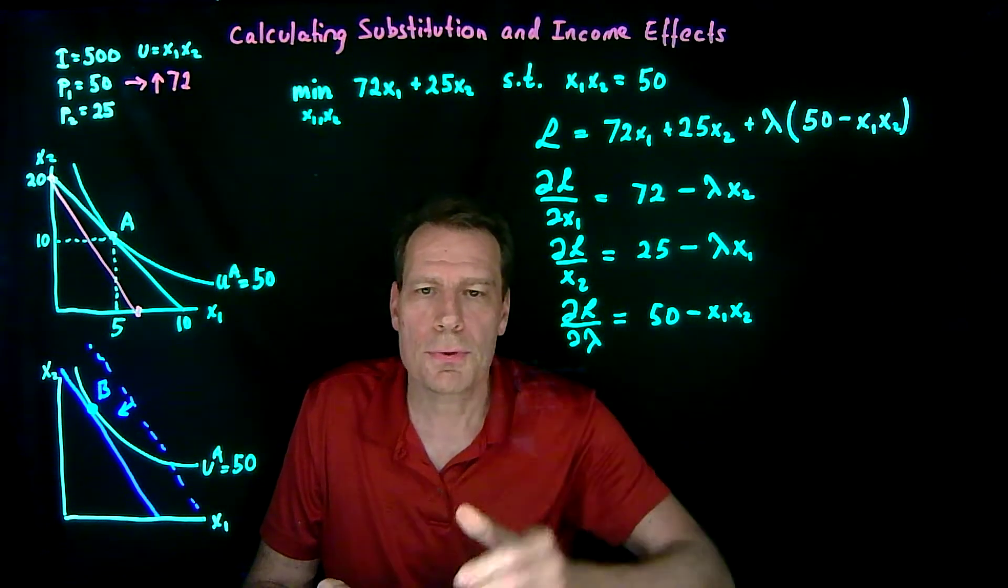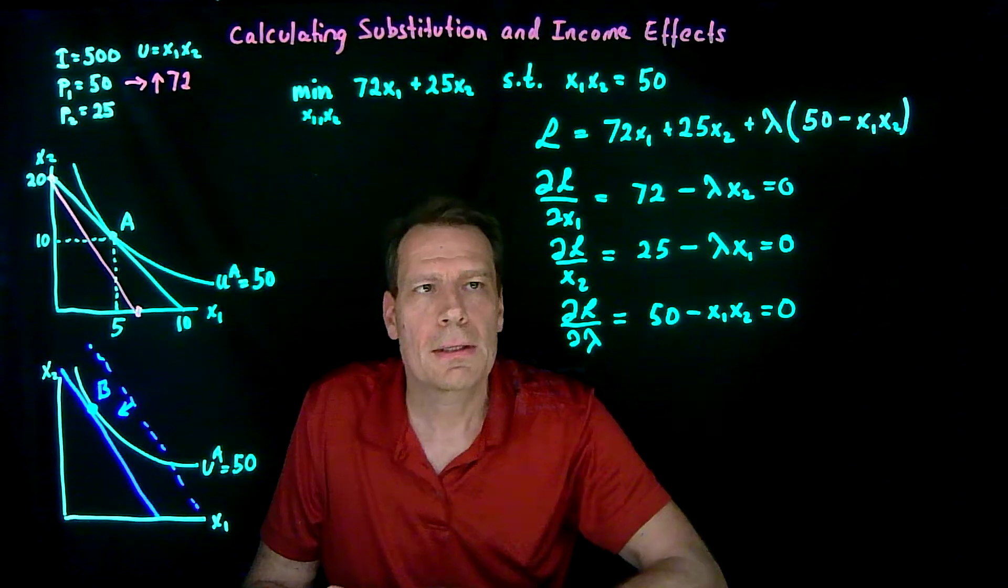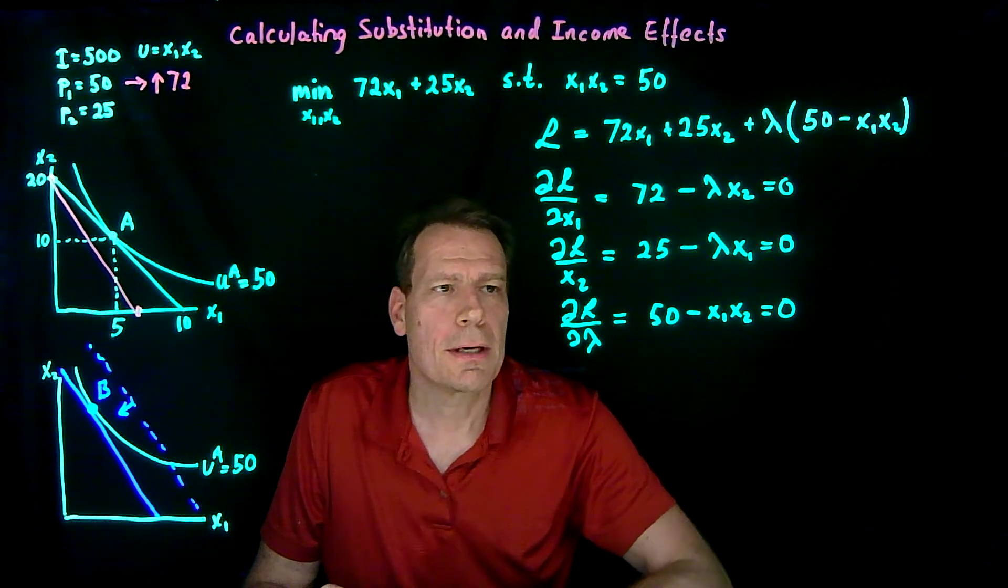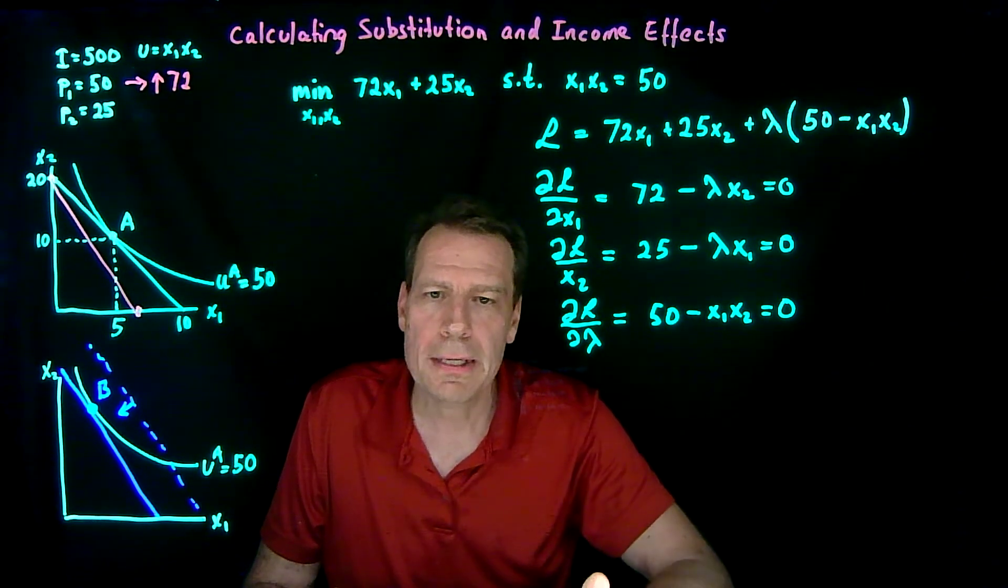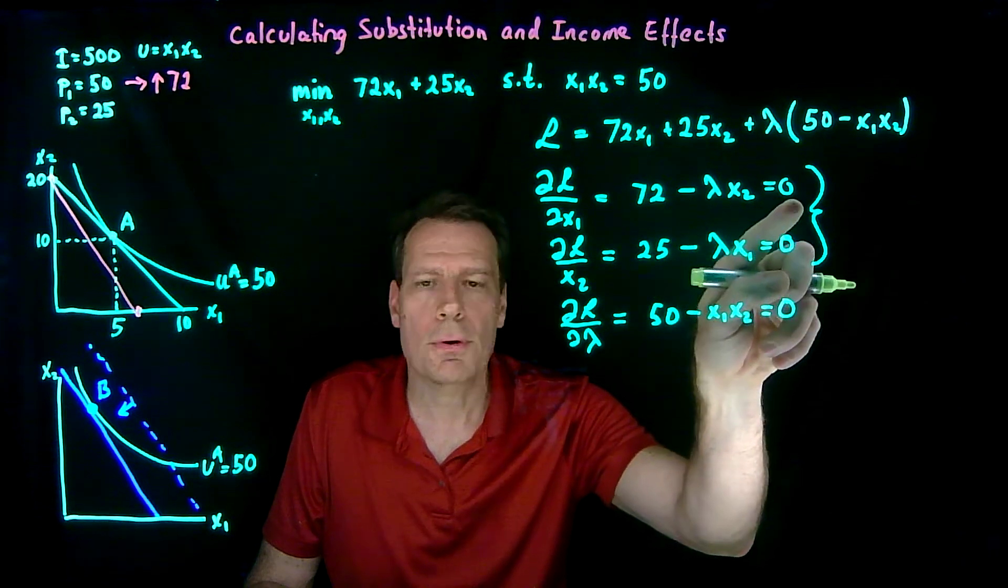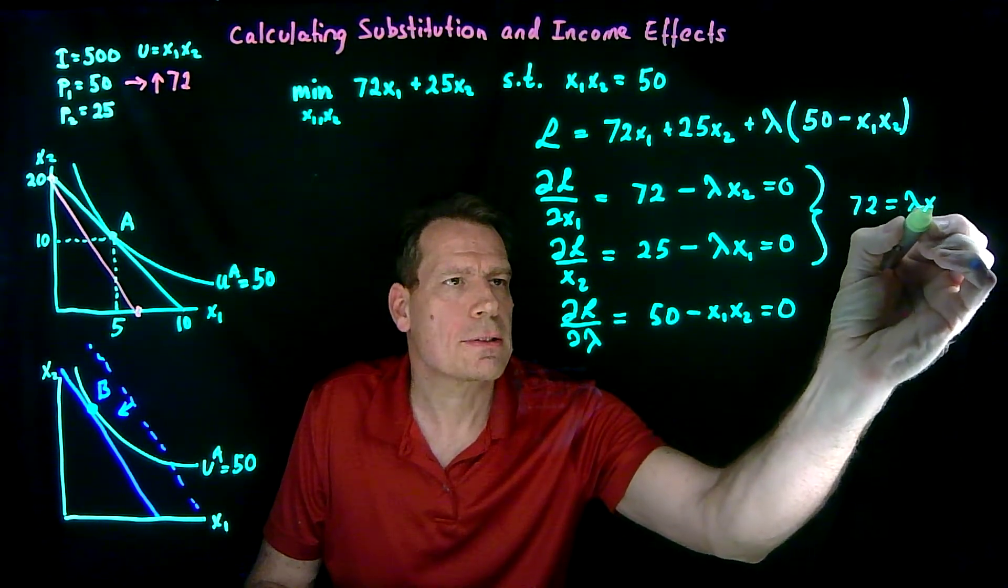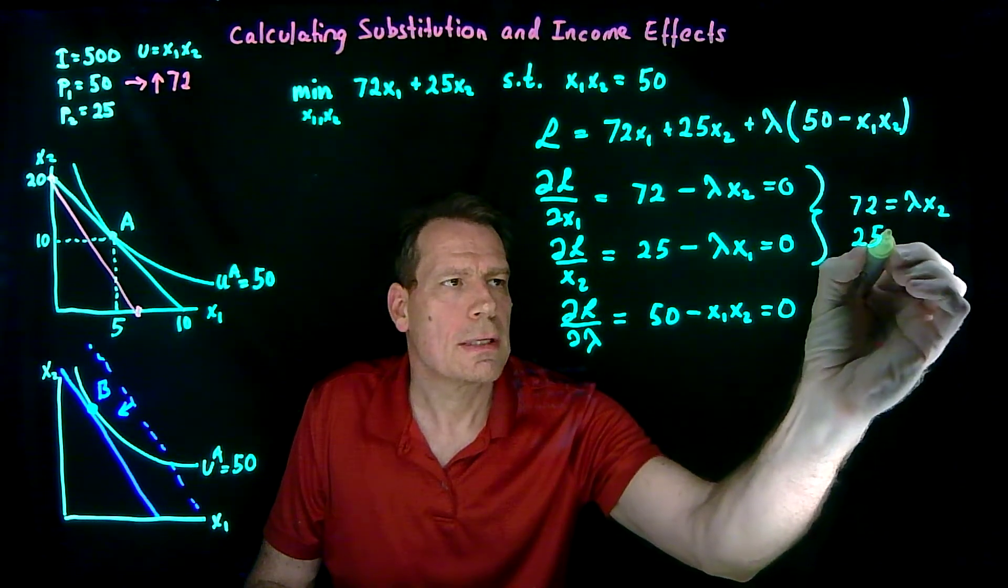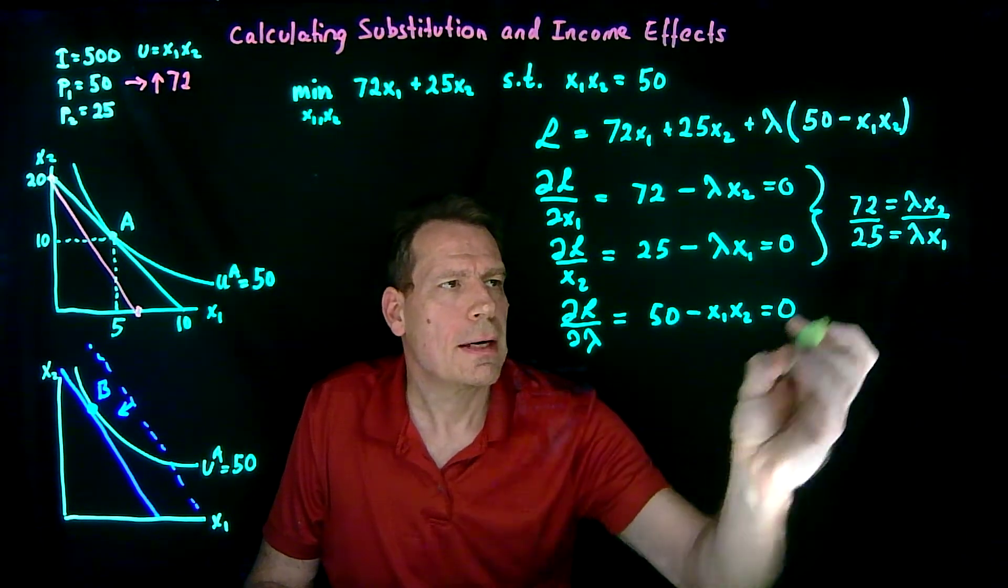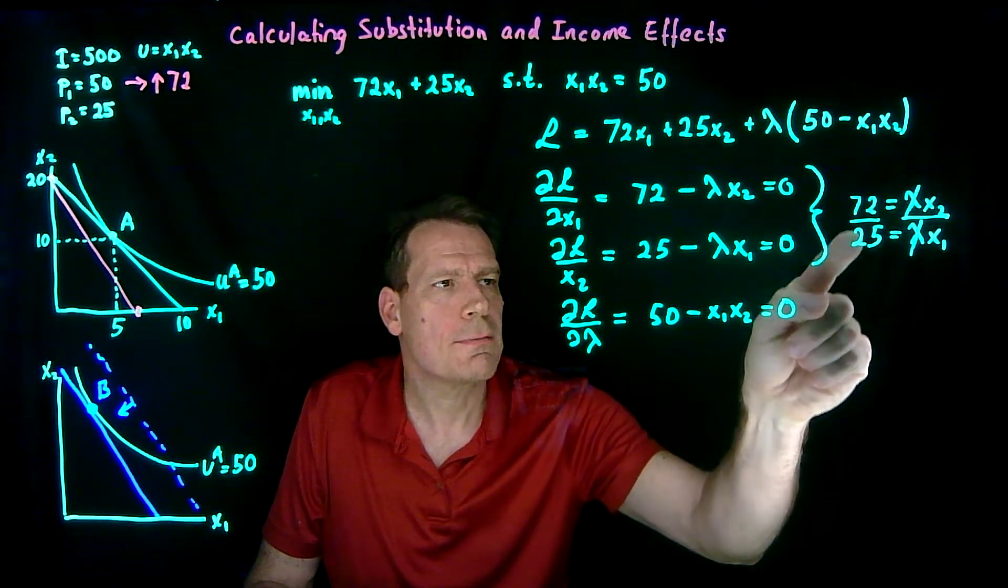The next thing we did is we set all of those to 0. So we set this to 0, set this to 0, and set this to 0. These are called our first-order conditions. And now we have three equations and three unknowns. The unknowns are x1, x2, and lambda. We don't really care about the lambda, so the lambda is what we're going to get rid of first. We're going to use these two equations. We're going to just take the negative terms to the other side, so we get 72 is equal to lambda times x2, and 25 is equal to lambda times x1. Then we divide the equations by each other, and that cancels out the lambdas. And so we get x2 divided by x1 is equal to 72 divided by 25.